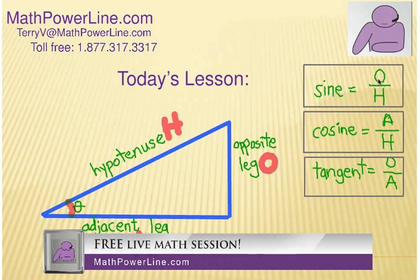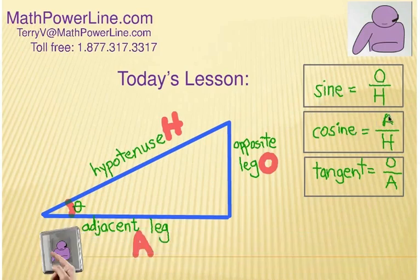So, the sine is the opposite leg divided by the hypotenuse. The cosine is the adjacent leg divided by the hypotenuse. The tangent is the opposite leg over the adjacent leg. So, we're going to take that relationship now and look at the unit circle.